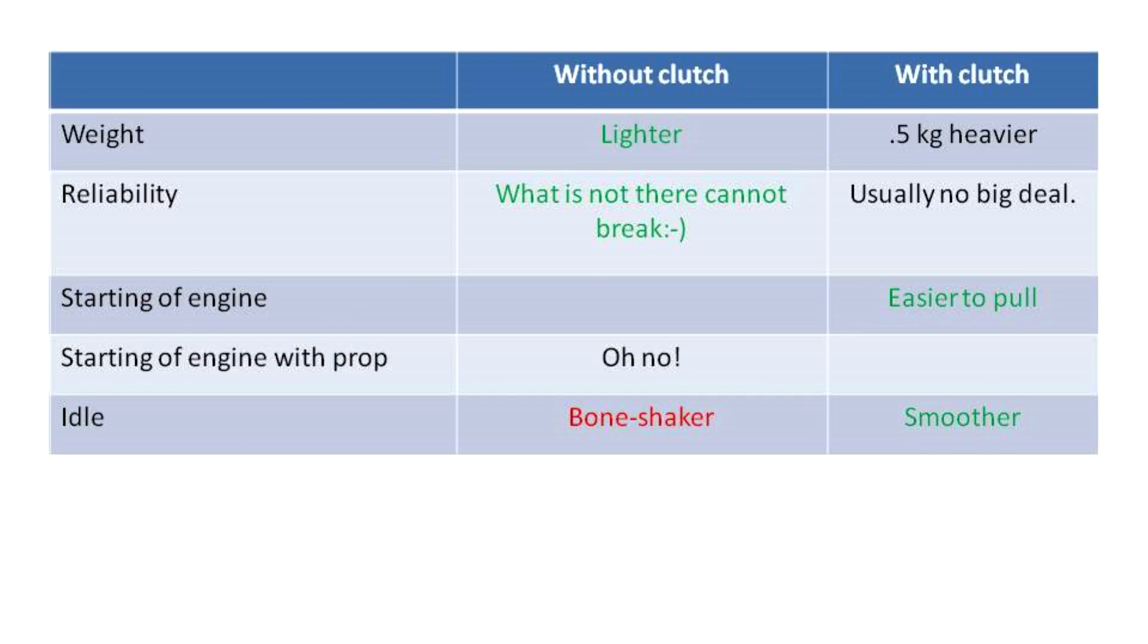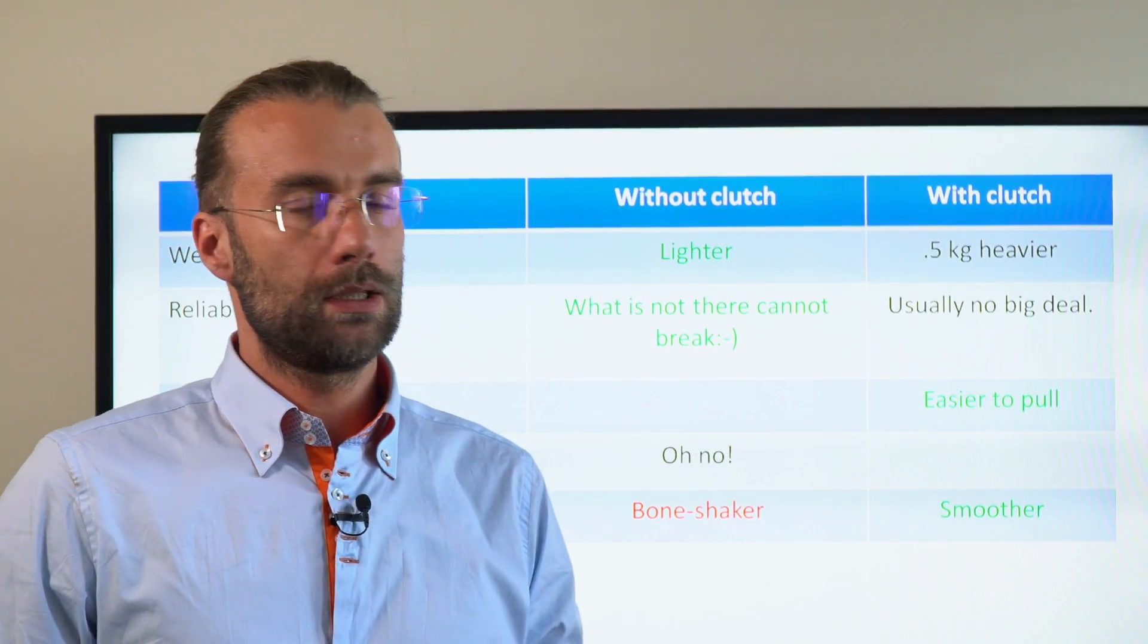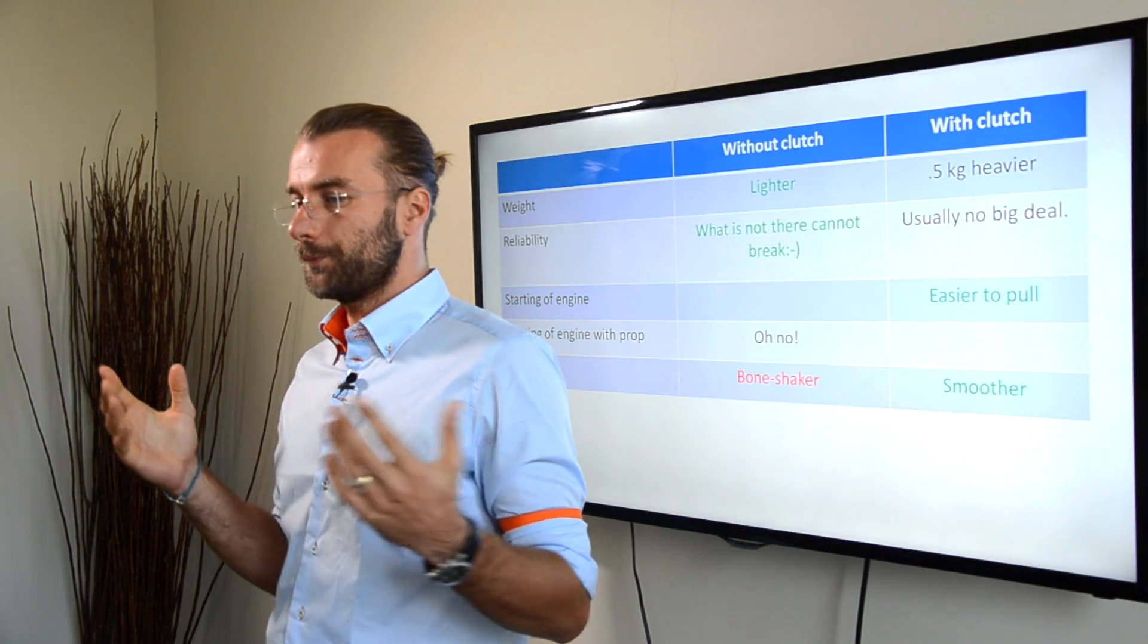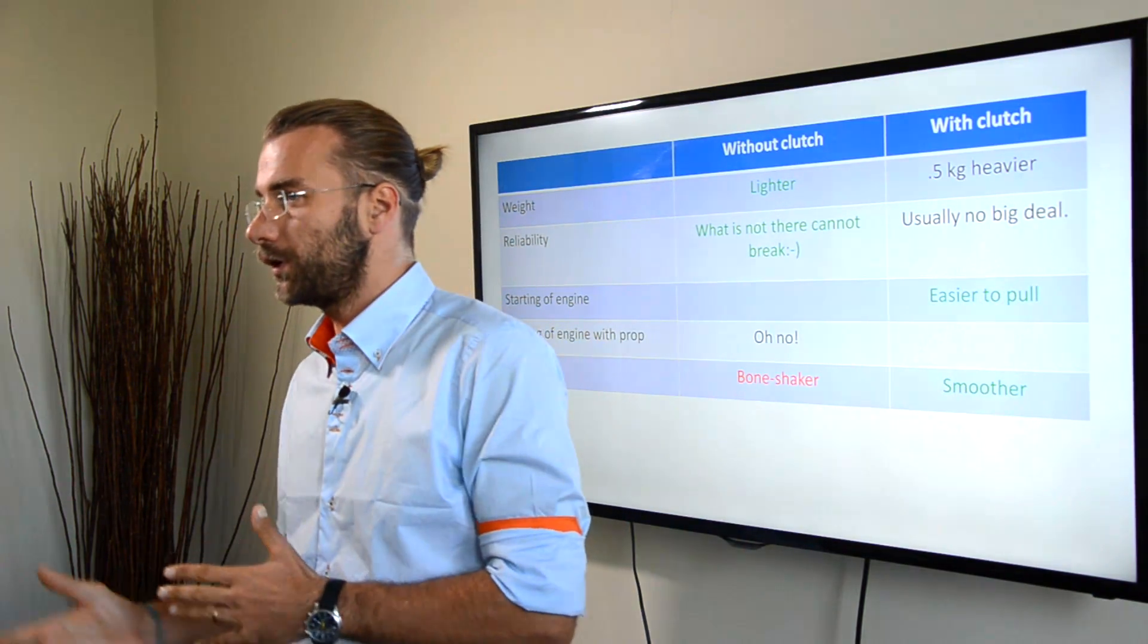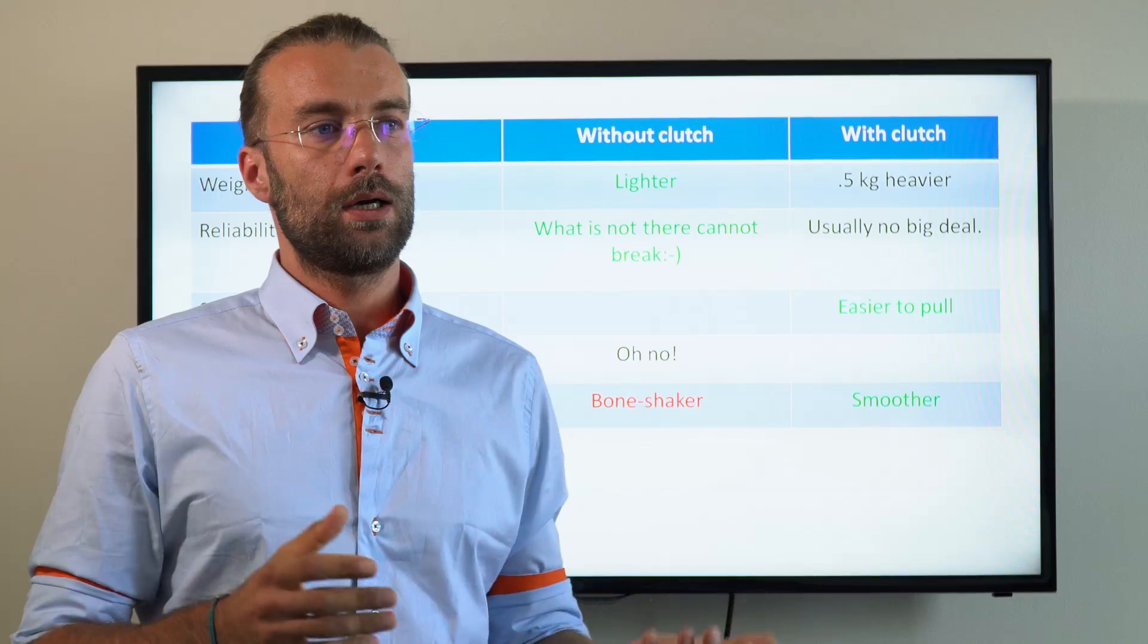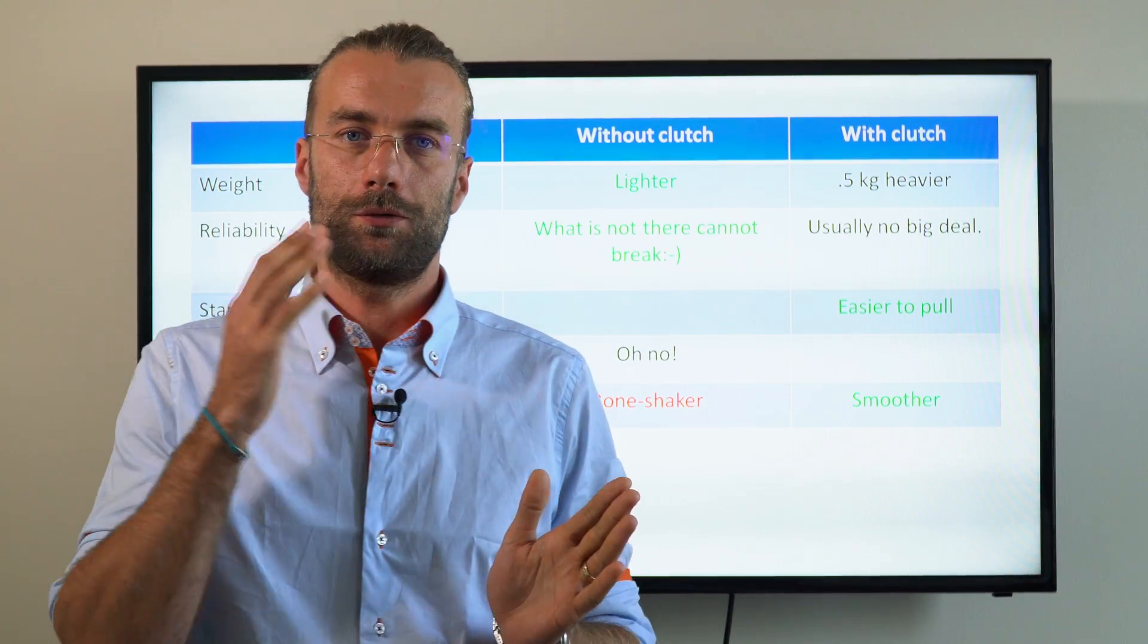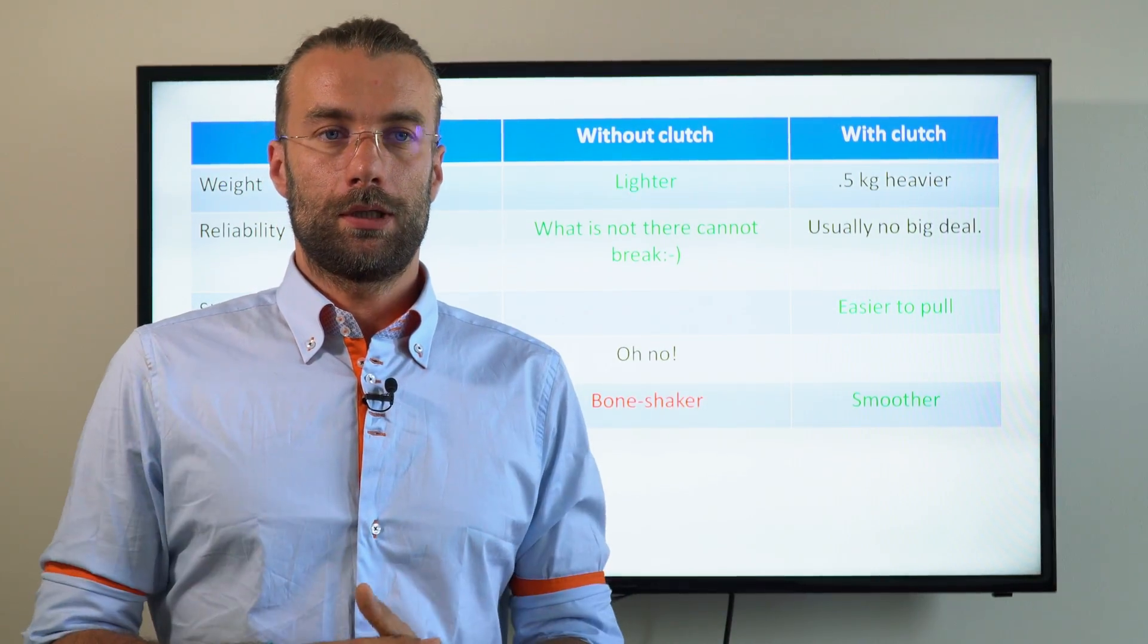I have noticed that the engine with clutch runs a lot smoother on idle, and there is a very simple reason. On the Vittorazi Monster Plus, the manufacturer recommends 2000-2200 RPM on idle. I, on the other hand, prefer slightly higher, maybe 2300-2400 for idle spinning.